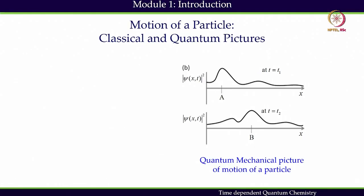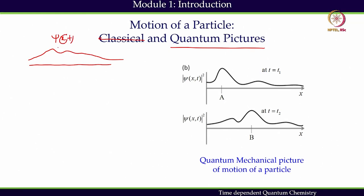To accept this idea — that we will not be able to tell exactly where the particle is — is very difficult classically. Classically, if I am sitting in this room in front of you, it means I am sitting here. But quantum mechanically, I have a probability of sitting here and a probability of sitting somewhere else as well — the most probable position is here, but that is why I am here. This concept needs to be switched as we move from the classical to the quantum picture.